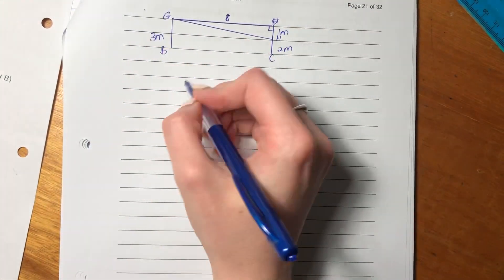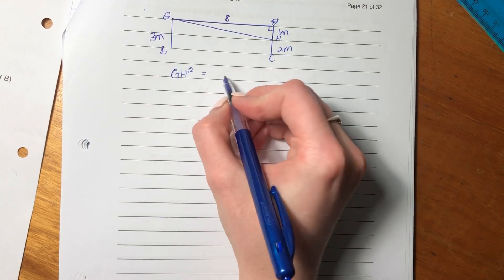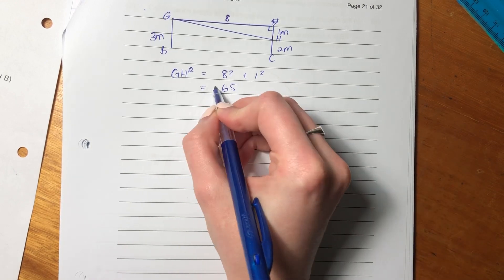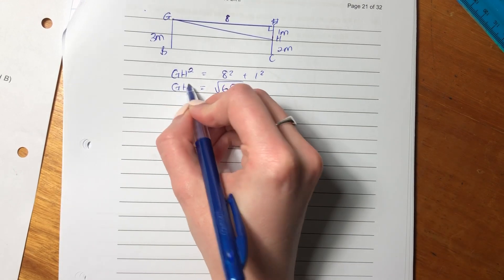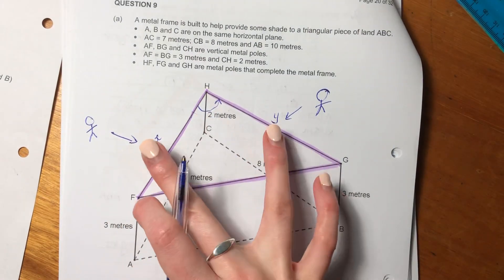So we want the length of GH. So we say GH squared equals eight squared plus one squared. So it's going to be GH is going to be the square root of 65. So now we have X and we have Y.